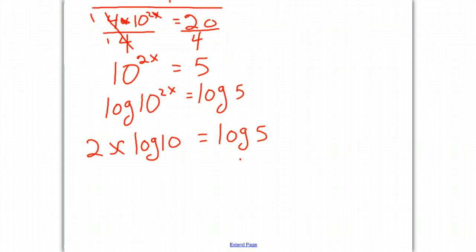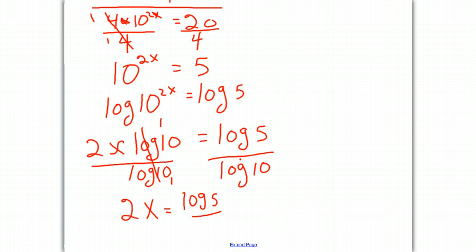And once again, we want to get x alone. So we want to divide by the log of 10. And the right side will divide by the log of 10. And now these log of 10s cancel out. And we get 2x is equal to the log of 5 divided by the log of 10.